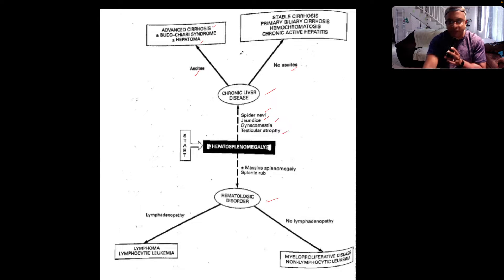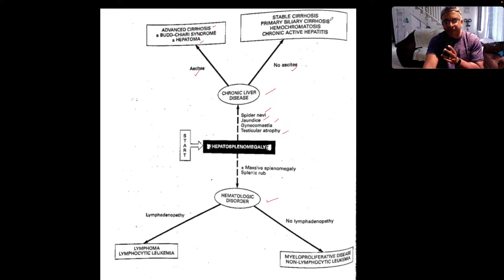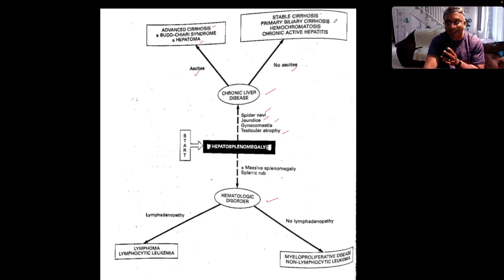However, if you don't have ascites but you've got stigmata of chronic liver disease and hepatosplenomegaly, then you're thinking: is this stable cirrhosis? Is this primary biliary cholangitis? The nomenclature has changed. Is it hemochromatosis or chronic active hepatitis?